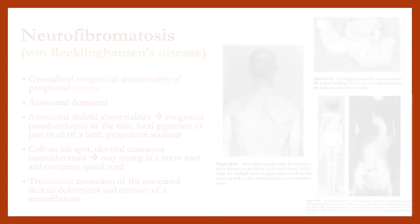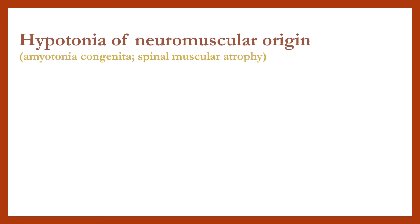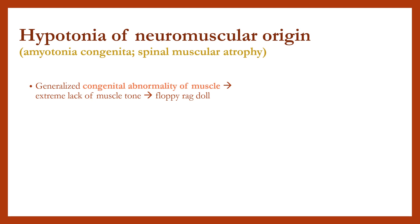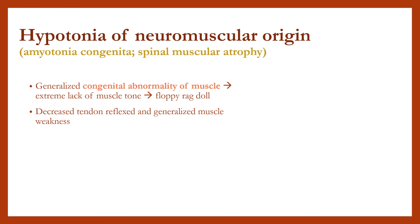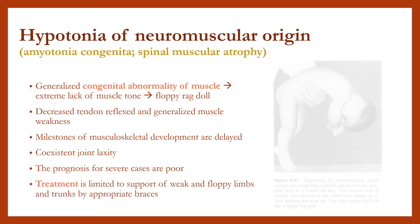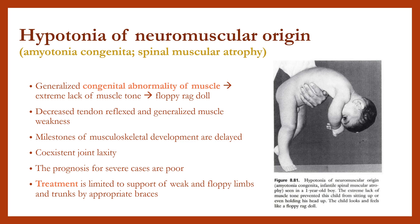Hypotonia of neuromuscular origin is a generalized congenital abnormality of muscle resulting in extreme lack of muscle tone — the child looks like a floppy rag doll. There is decreased tendon reflex and generalized muscle weakness. Milestones of musculoskeletal development are delayed, with co-existent joint laxity. Prognosis for severe cases is poor. Treatment is limited to support of weak and floppy limbs and trunk by appropriate braces.